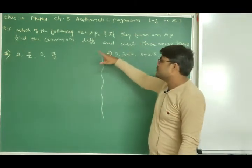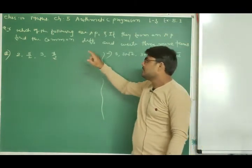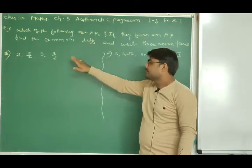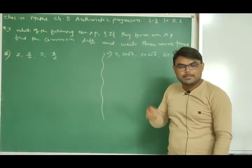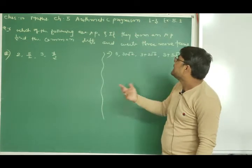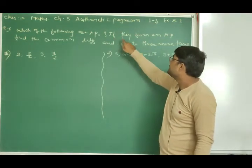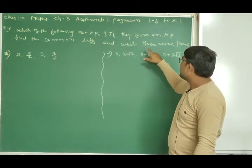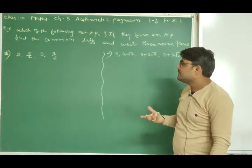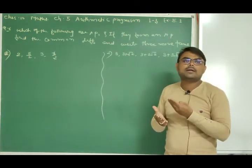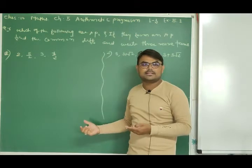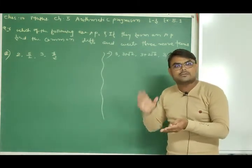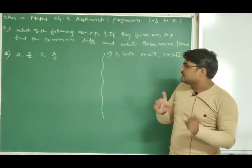Now look at question number 4 of exercise 5.1. The question asks: which of the following are APs? We have to check whether each given progression is an AP or not, and if it forms an AP, then find the common difference and write three more terms. If the common difference is the same throughout, then it is an AP.